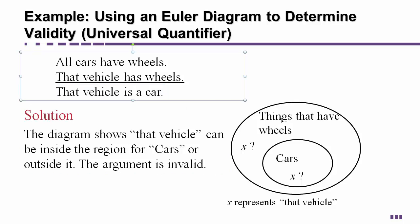Because of that it does not prove or force the conclusion to be true. That vehicle is not necessarily a car because it could be out here and things that have wheels and it could be a bicycle or a motorcycle or a unicycle or a bunch of things that have wheels that aren't cars. It could be a car but it doesn't force it to be true so therefore it is an invalid argument.